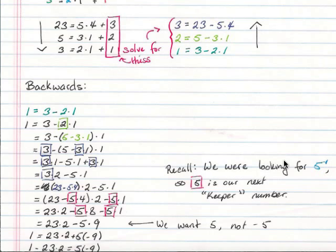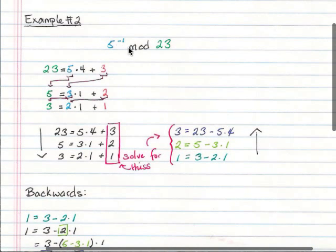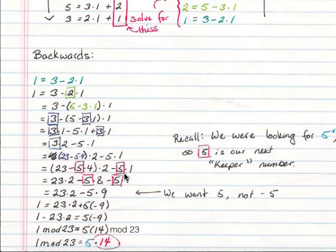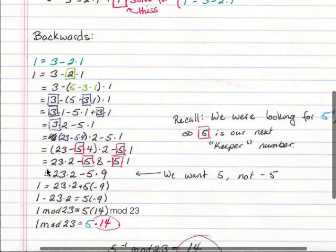So the next number is 5, because our original problem was the inverse of 5 mod 23. So 5 is our next keeper number. All right, so I put a little red box around the 5s so that I would remember not to touch them, not to mess with them, and I rewrote it. 23 times 2 minus 5 times 8. See, when I multiply this 2 over here, I multiply it times the 4, not times the 5, which I could have done, but that would have kind of messed me up because I want to keep my 5s because 5 is our next number.